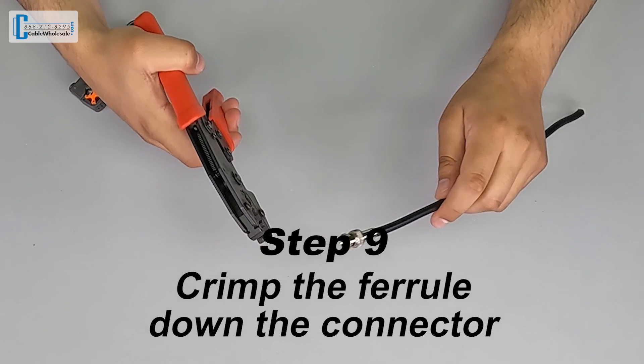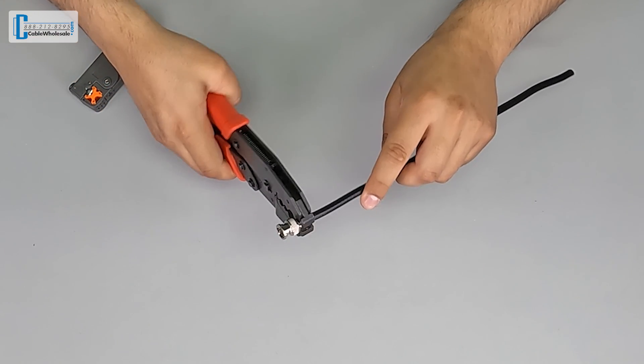Now for step nine, we'll grab our crimp tool and use it to crimp the ferrule down around the base of the connector.